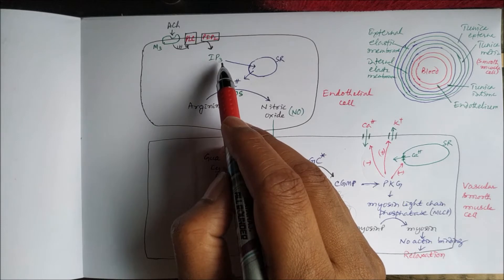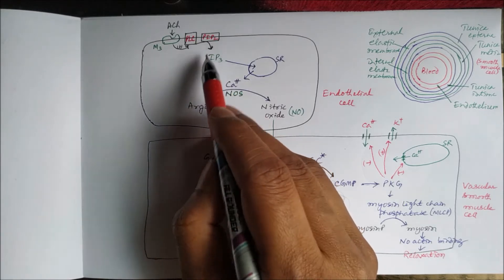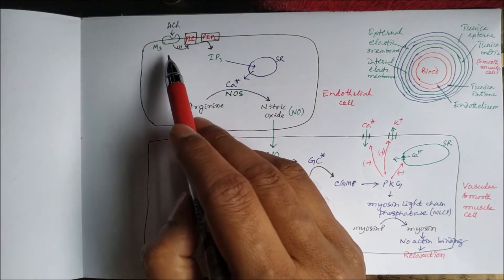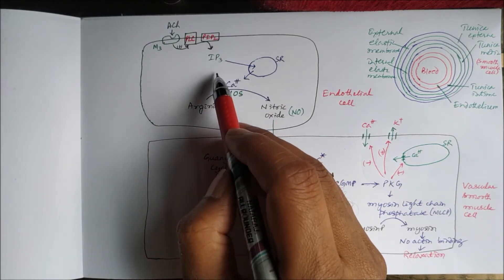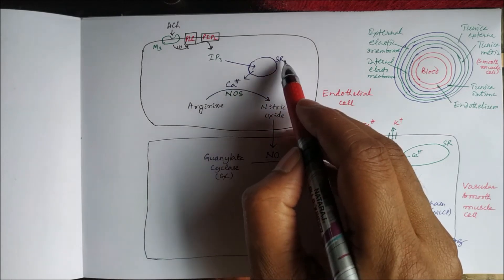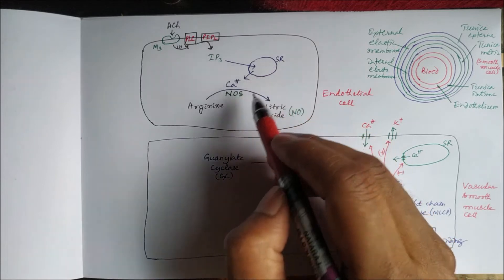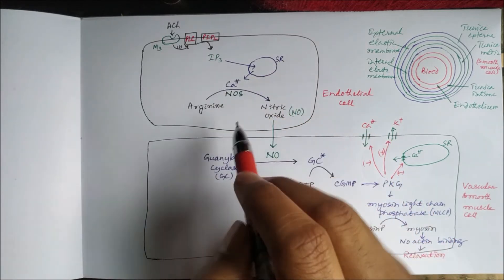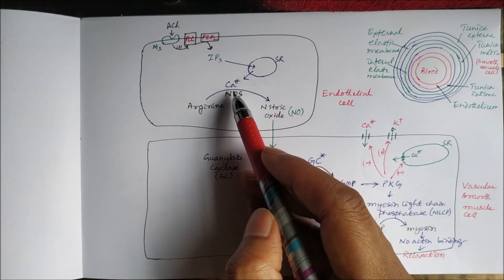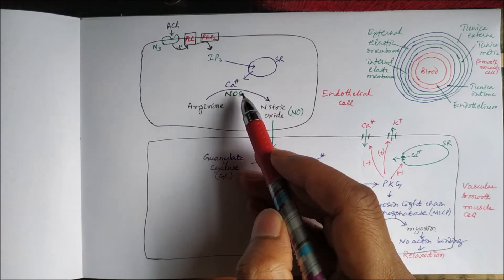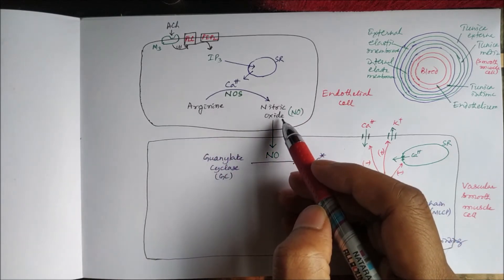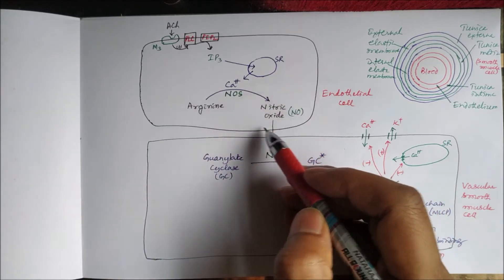...to inositol triphosphate (IP3). IP3 acts as the second messenger for acetylcholine. This IP3 acts on the calcium stores present in the sarcoplasmic reticulum to release calcium, and this calcium, in the presence of nitric oxide synthase, converts arginine to nitric oxide.